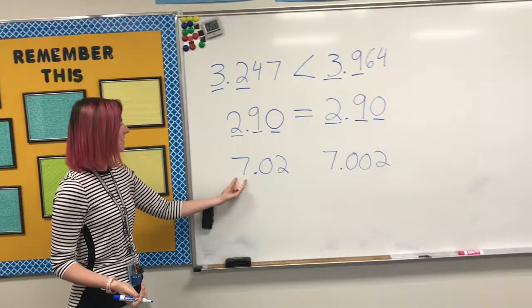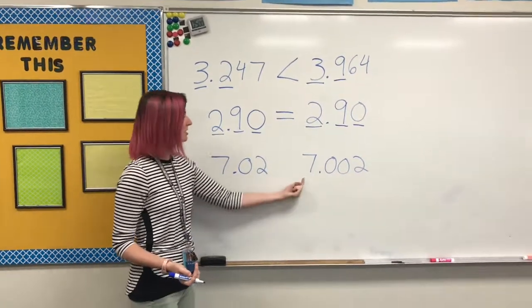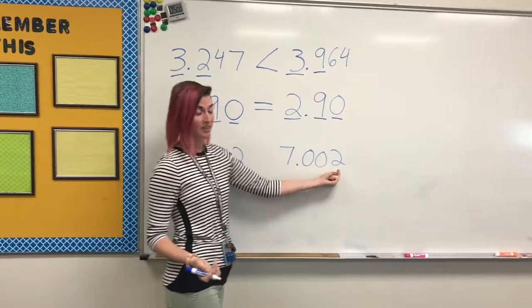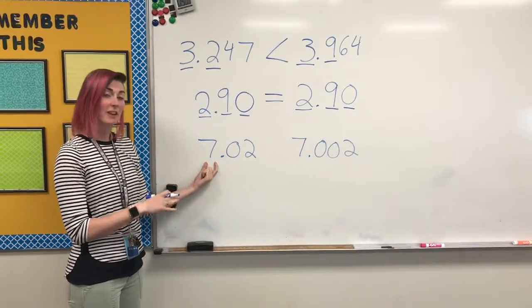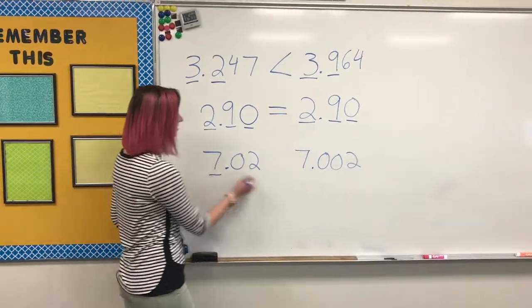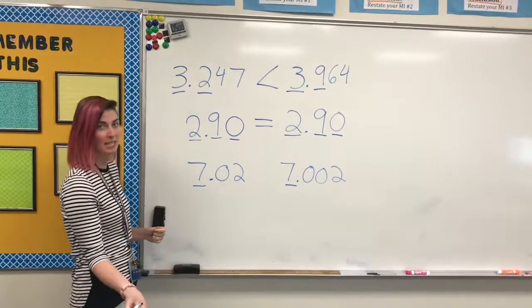Our next example, 7 and 2 hundredths being compared to 7 and 2 thousandths. Moving place value by place value, we have 7 in the ones. It's the same, so we move to the next one. We have 0 and 0 in the tenths.